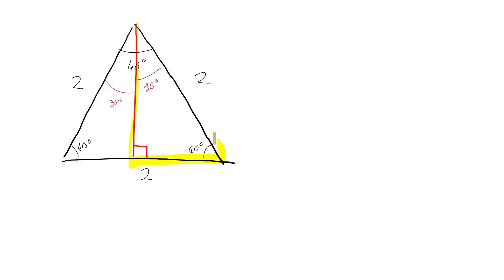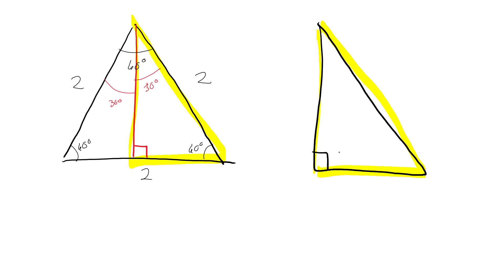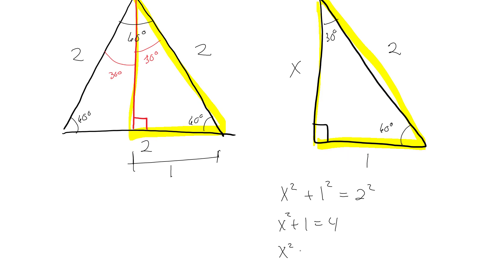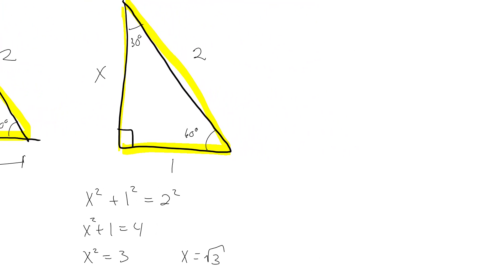If I take one of those resulting triangles on its own: at the top I have a 30 degree angle, at the bottom a 60 degree angle, and there's a right angle. The hypotenuse is still 2, and because I bisected the equilateral triangle, the short side is 1. Using the Pythagorean theorem: x² + 1² = 2², so x² = 3, meaning x = √3.